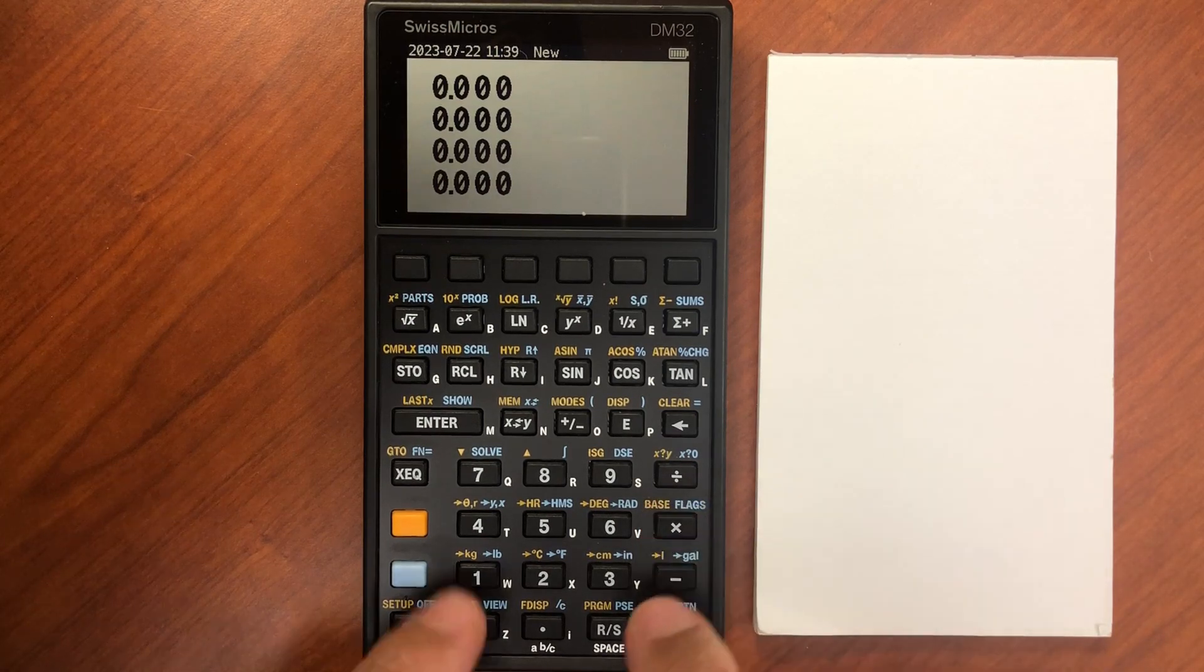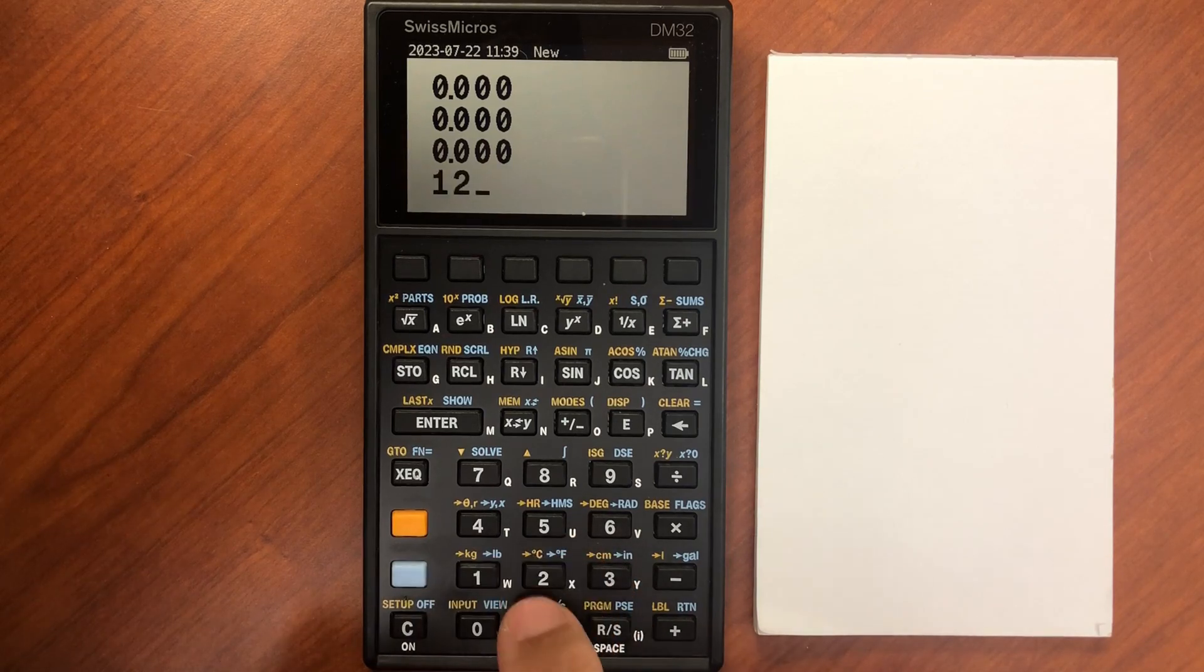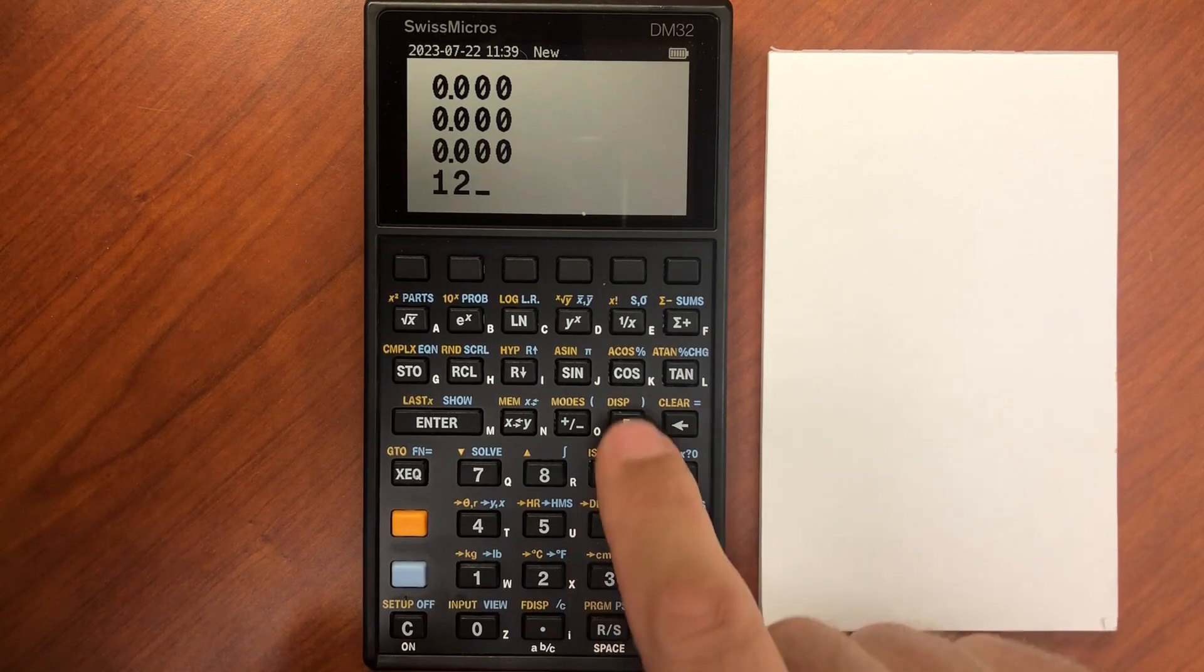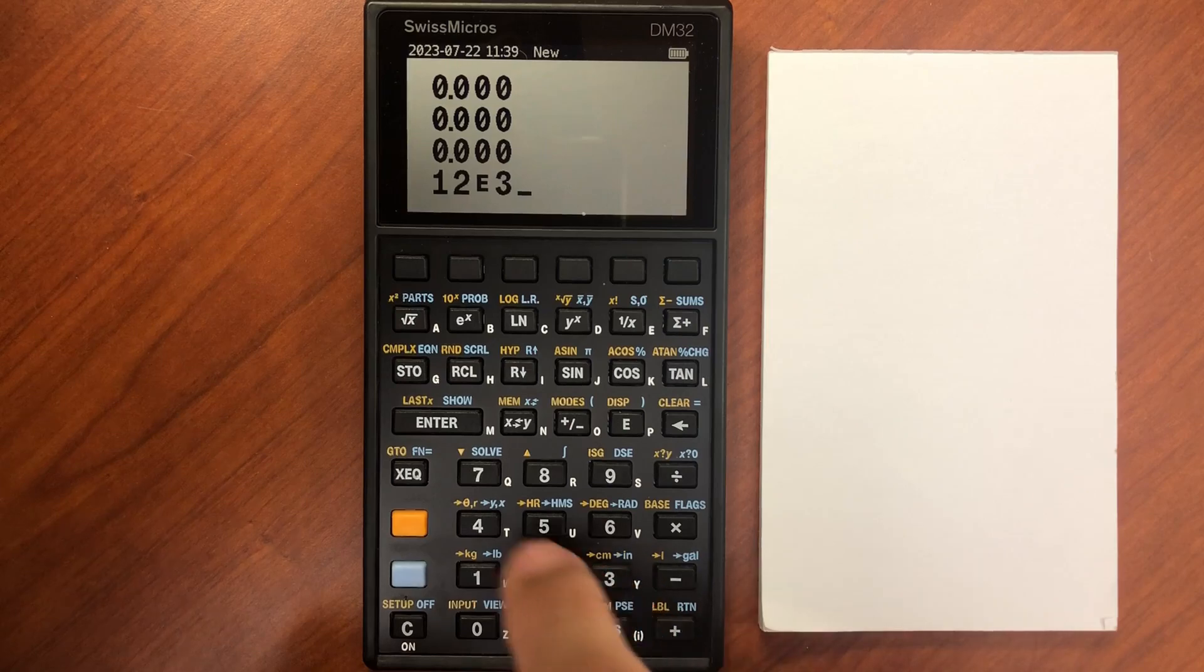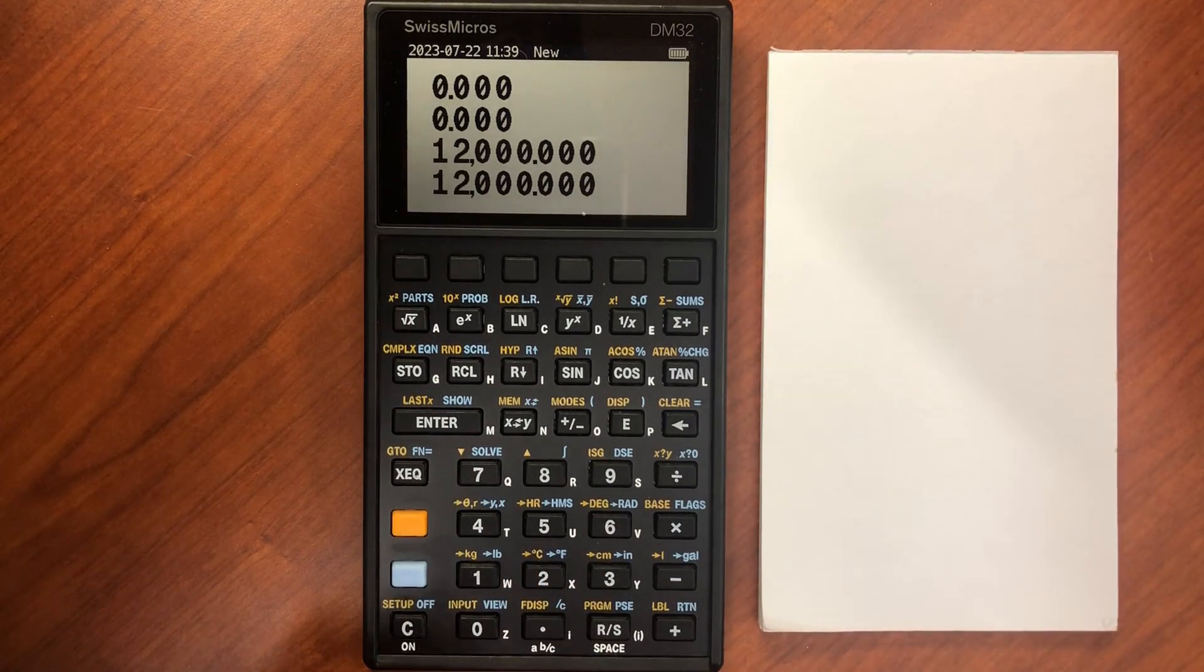Now let's say I have something like 12 times 10 to the third. So with all mode, it displays 12,000.